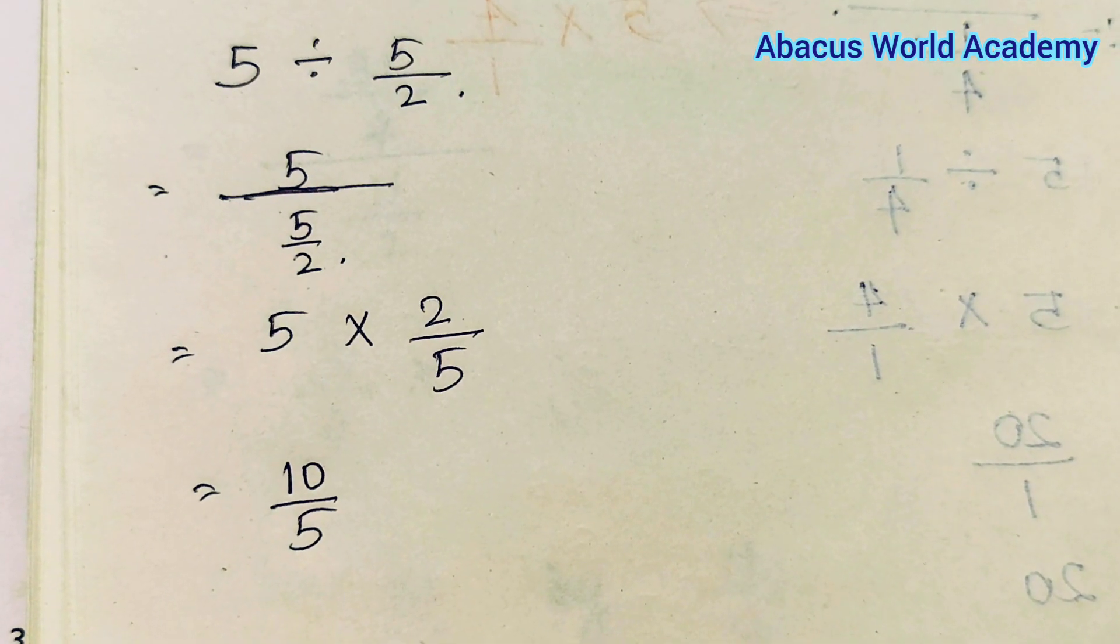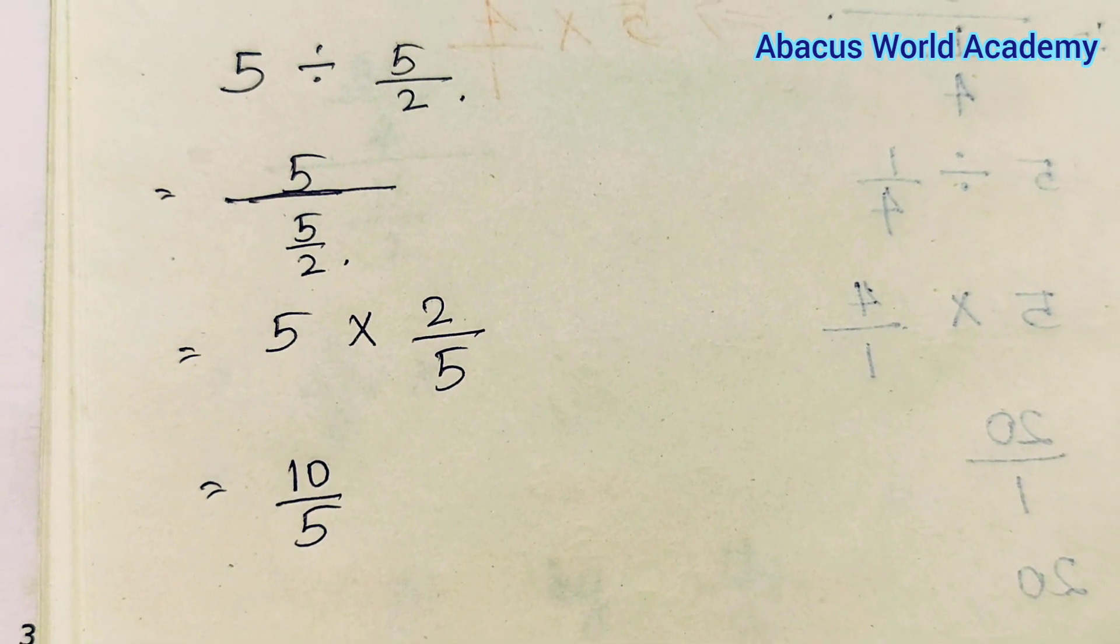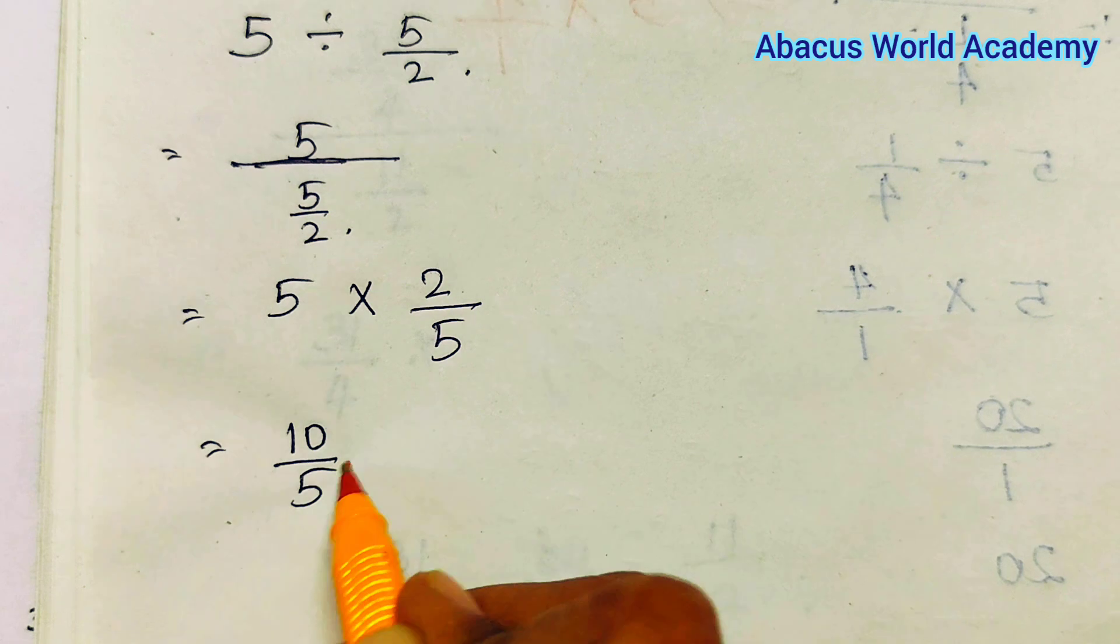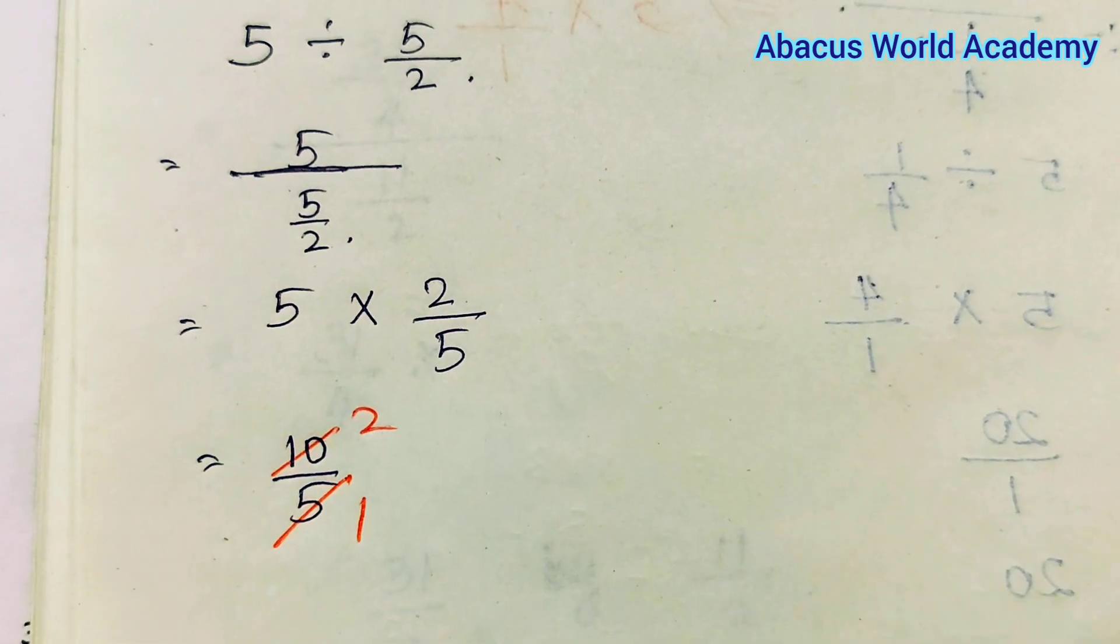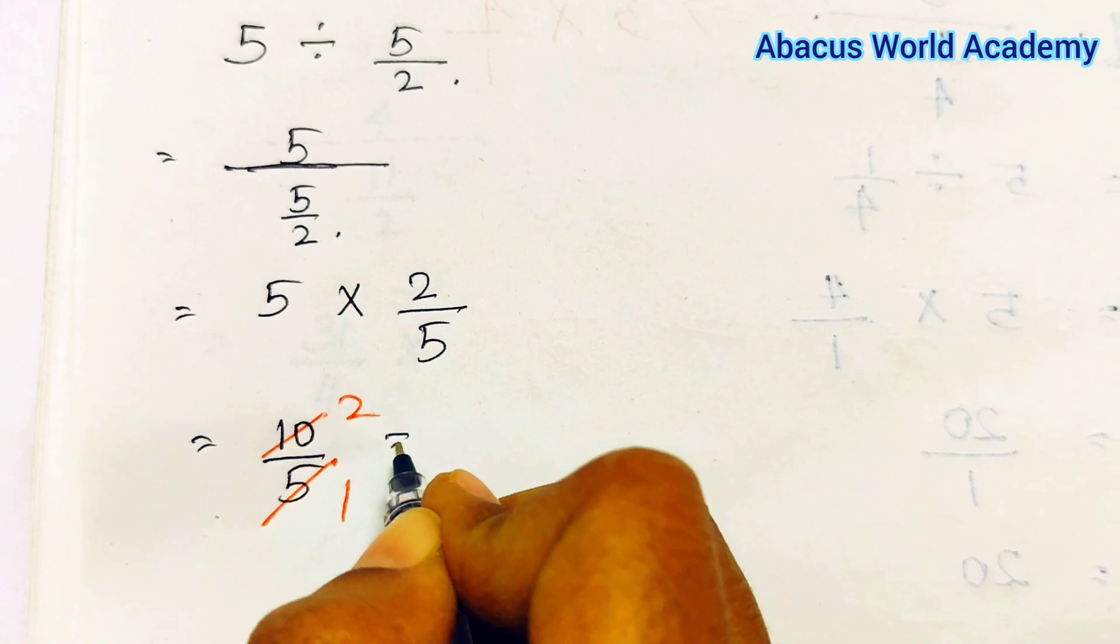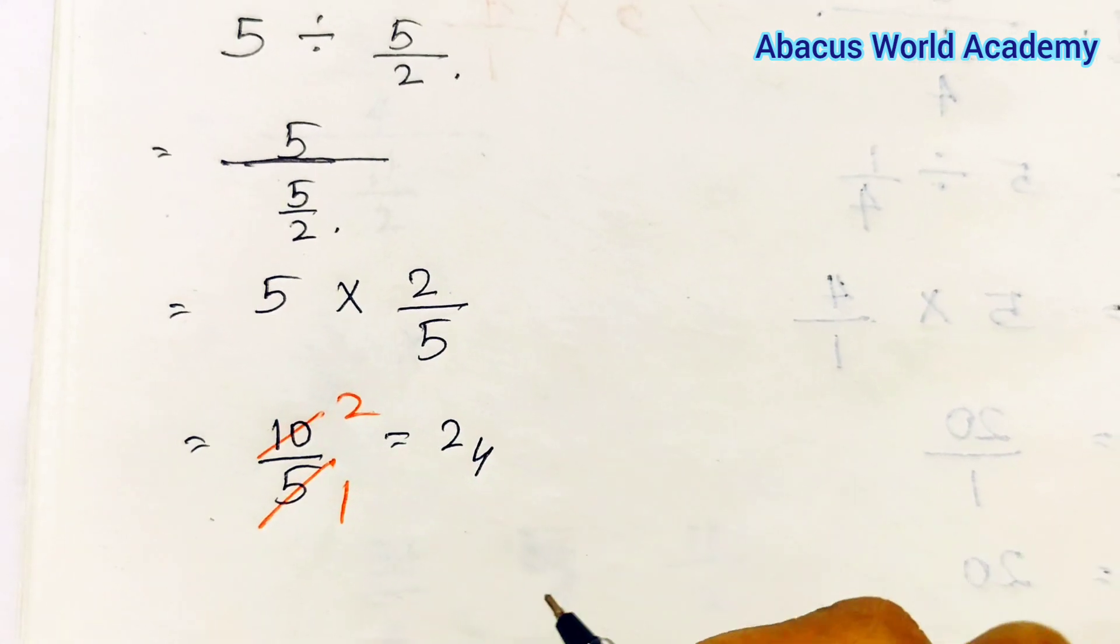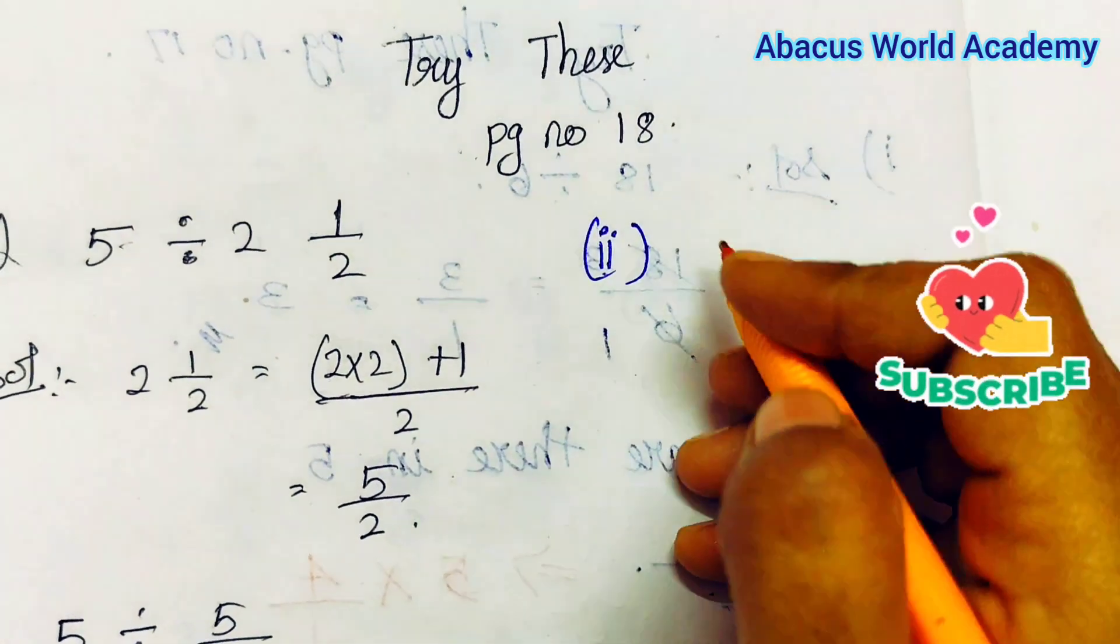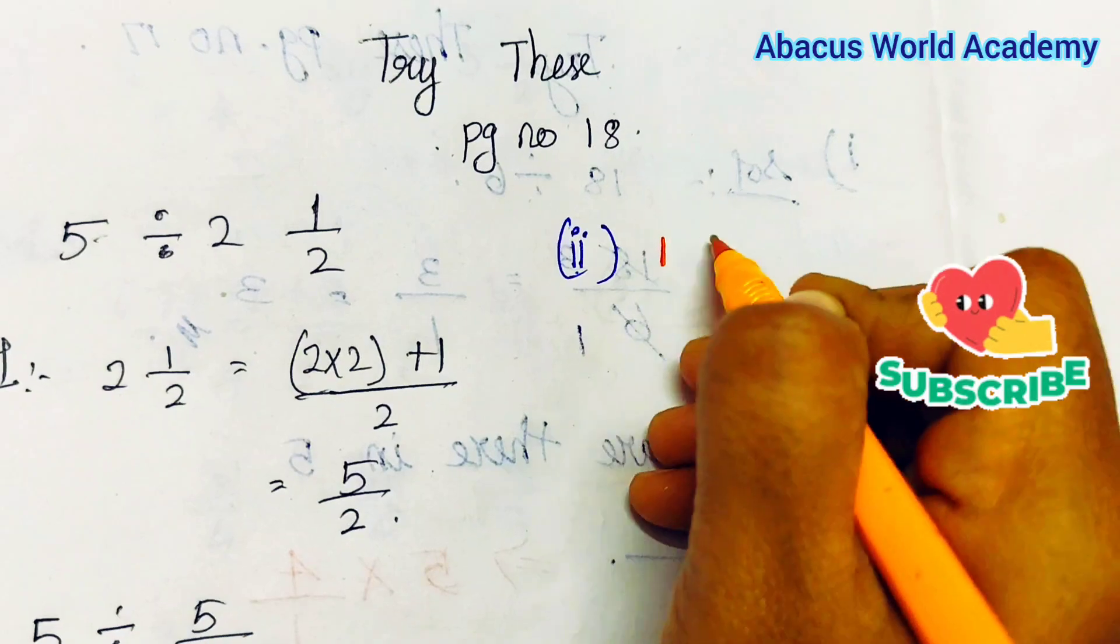If you cancel the answer, cancel the answer. No problem, okay. So let's see: 1 times 5 is 5, 2 times 5 is 10. So is equal to answer 2. This is the answer.